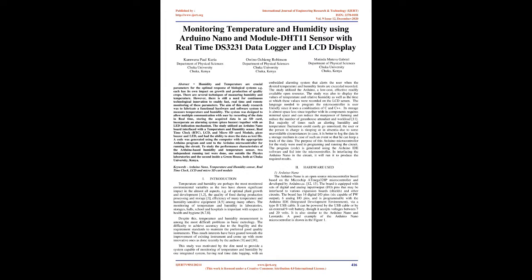This study was motivated by the dire need to provide a system capable of monitoring temperature and humidity by one integrated system, having real-time data logging, with an embedded alarming system that alerts the user when the desired temperature and humidity limits are exceeded. The study utilized the Arduino, a low-cost, effective, readily available open resource. The study was also to display the values of temperature and relative humidity as well as the time at which these values were recorded on the LCD screen. The language needed to program the microcontroller is user-friendly since it uses a combination of C and C++. Its storage is almost space-less, requiring minimal space, and can reduce the manpower of farming and the number of greenhouse attendants and workload.